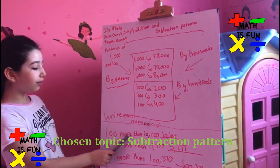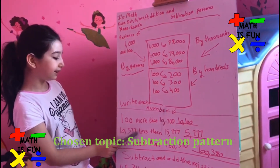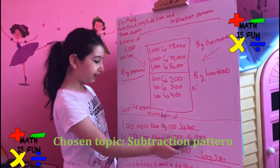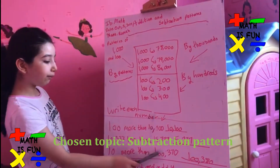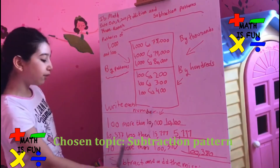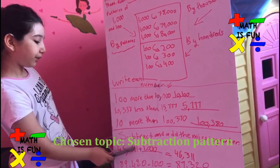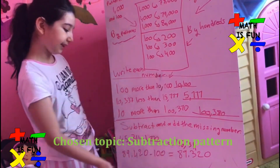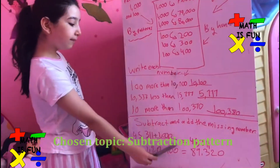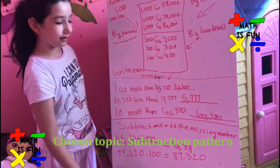Write each number: 100 more than 10,000 is 10,100. And 10,337 less than 15,777 is 5,777. 10 more than 100,370 is 100,380. Now subtract and add the missing number: 45,311 plus blank equals 46,311, so the answer is 1,000 because the thousands are different. And 89,320 minus blank equals 89,220, so the answer is 100 because it's different by 100.